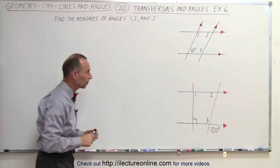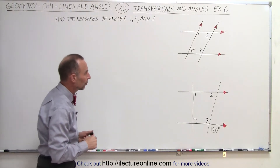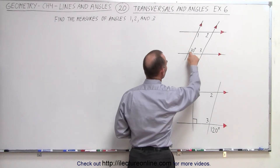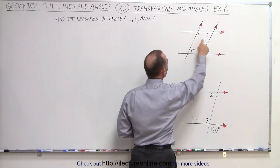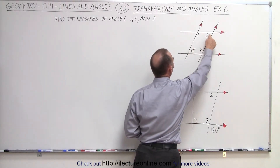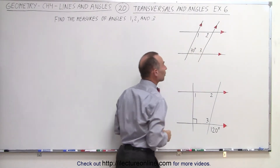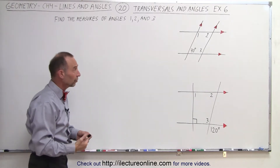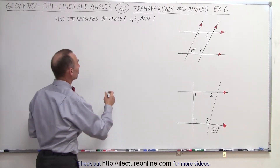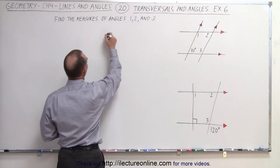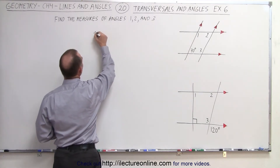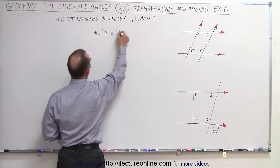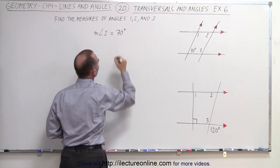Starting with the exercise up there, notice we have 70 degrees and angle 2. These are what we call alternate interior angles, and alternate interior angles are indeed equal to one another, so therefore we can claim that the measure of angle 2 must also be 70 degrees.